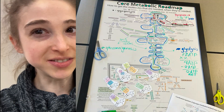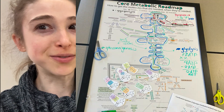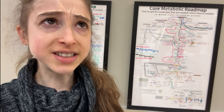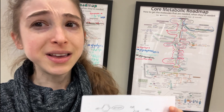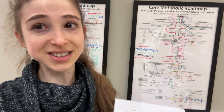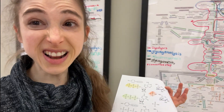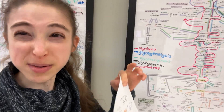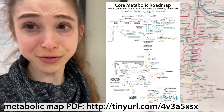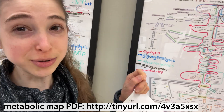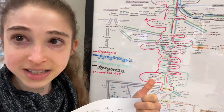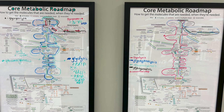In class today we did a few fun activities to try to keep track of all those G's of glycolysis, gluconeogenesis, glycogenesis, and glycogenolysis. The easiest way to picture it all is to chart it out and actually follow these different pathways. I took these metabolic roadmap posters I made and put them in a picture frame so that we could use whiteboard markers on them and be able to erase things. I had the students trace out the pathways of glycolysis, gluconeogenesis, glycogenesis, and glycogenolysis.